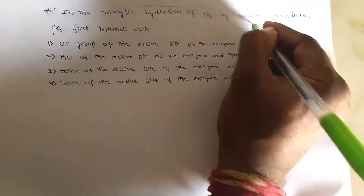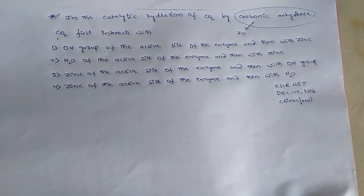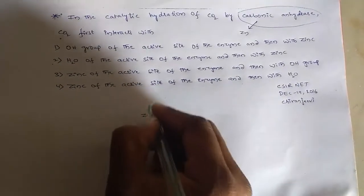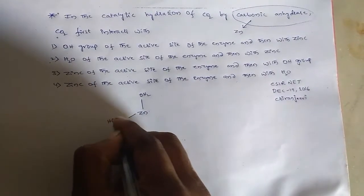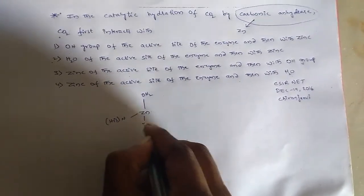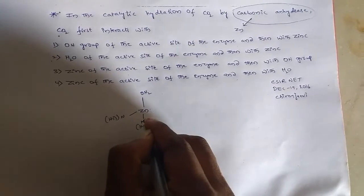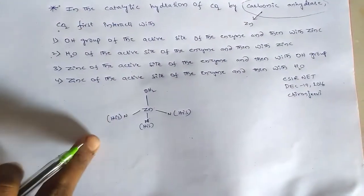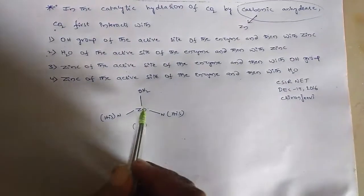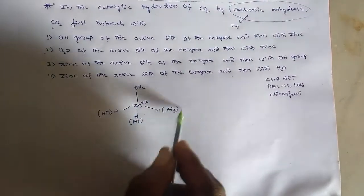Carbonic anhydrase has an active metal, that is zinc (Zn²⁺). This is the structure of carbonic anhydrase. It has the active metal zinc²⁺, and it is coordinated with one water molecule and three histidine nitrogens.